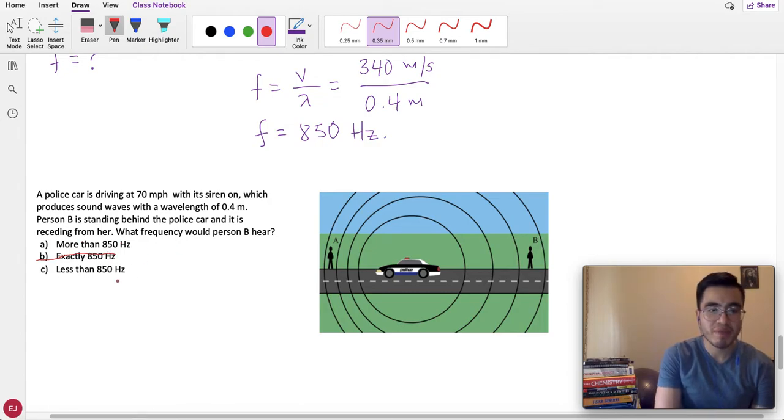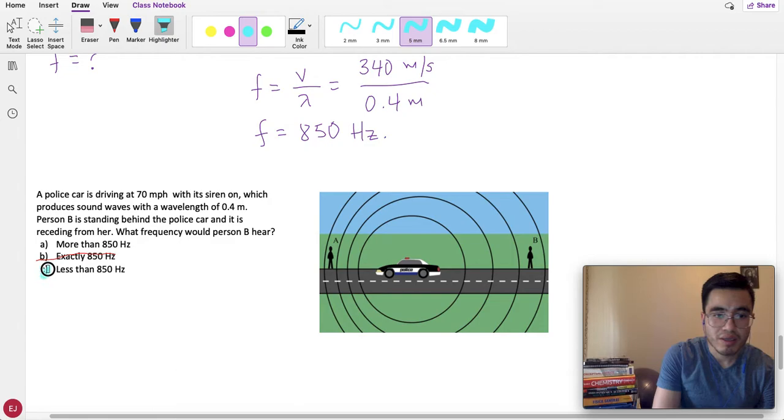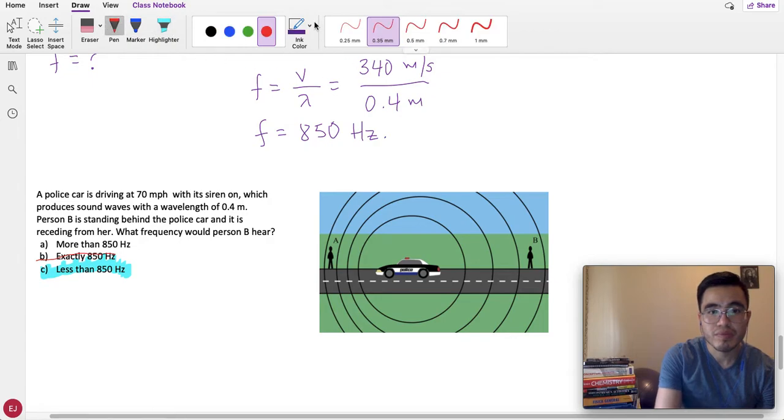It cannot be more than 850, because that was the answer for person A, about 936. So, the only one left is less than 850. And, as you can see, the wavelength is longer for person B than for person A. So, if the wavelength went up, that means the frequency goes down. So, that's to be below 850, less than 850.